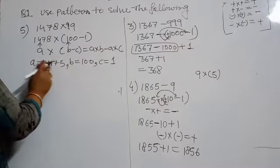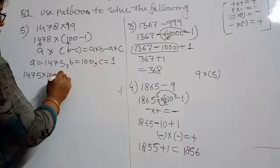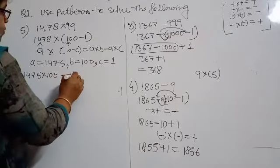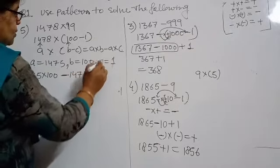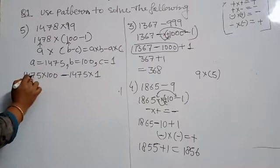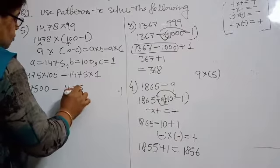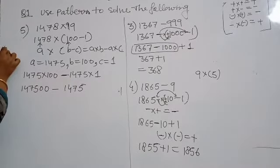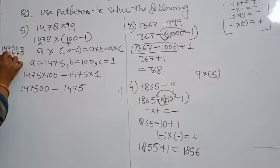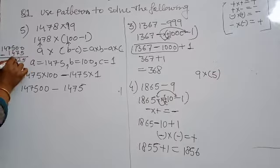Now put in the values: A into B means 1478 multiplied by 100, minus A into C means 1478 multiplied by 1. So it becomes 147800 minus 1478. Now subtract: 0 minus 8 — borrow to get 10 minus 8 equals 2; 9 minus 7 equals 2; 4 minus 4 equals 0; 7 minus 1 equals 6. So the answer is 146,322.